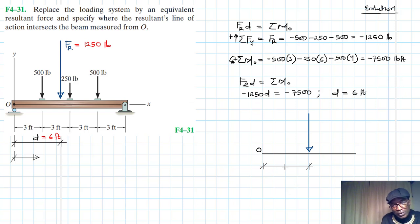So we are saying this d here is equal to 6 feet, and then this FR here is equal to 1250 pounds. And the whole dimension of this particular beam from O to the end - from here to the end somewhere there - this is going to be equal to 12 feet. And this is really about it.